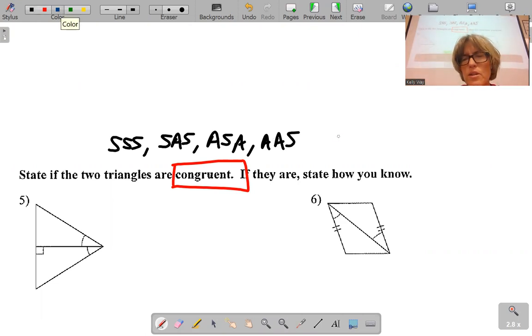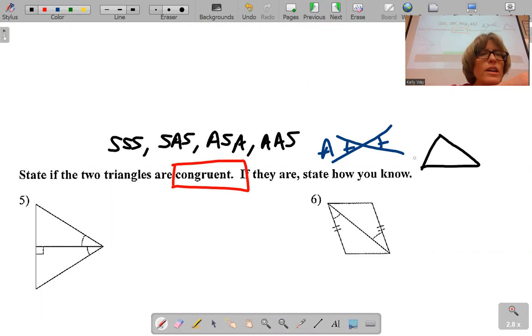Mark your freebies. So if you have a pair of vertical angles, you should mark them A for angles. If you have a reflexive side that's shared, hatch mark side, and then a rare occasion, this would be a reflexive angle, an angle that's shared by two.